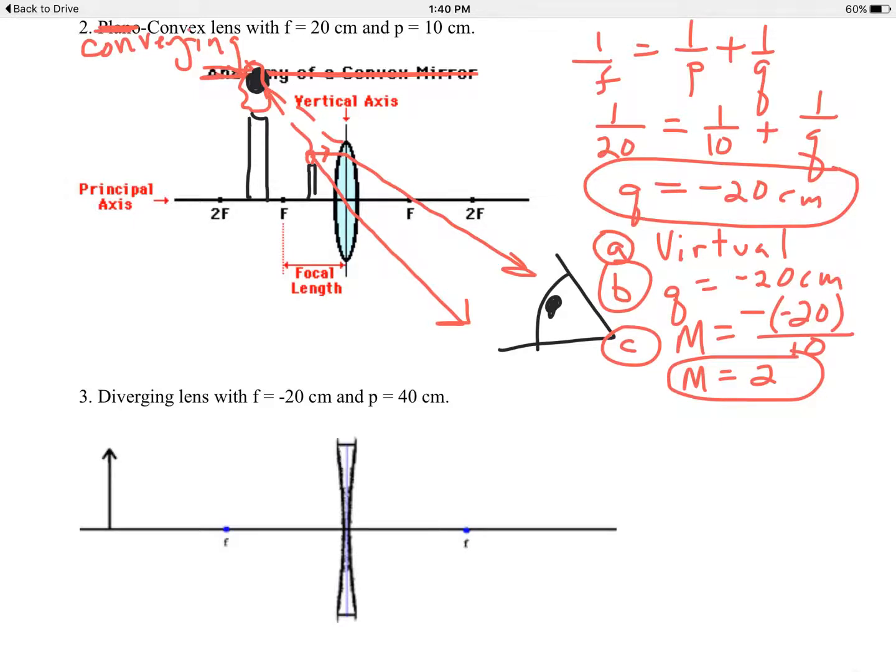And it just so happens that one ray of light would come parallel to the principal axis, go through the lens, but it refracts, bends, such that it lines up with F. That's the refracted ray number 1. It lines up with the F on the left-hand side.